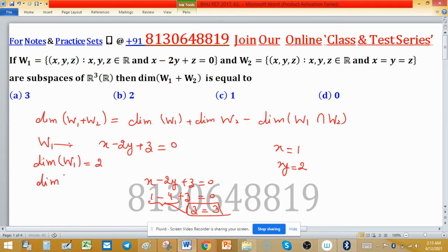Now dimension of W2. Elements have the property x equal to y equal to z. You are independent on a single choice. If you have the value of x, that means the value of y and z is the same. Only one independent choice, so dimension of W2 is 1.